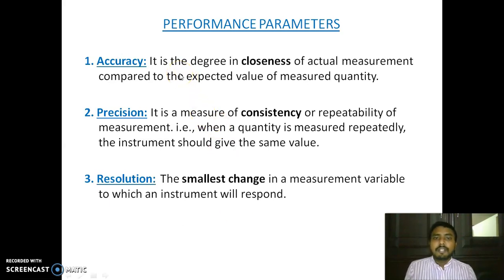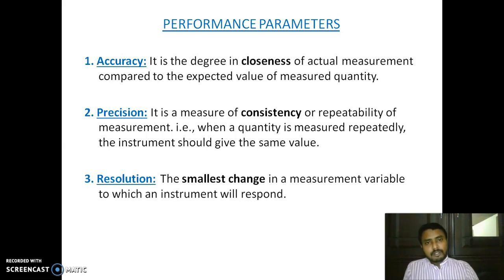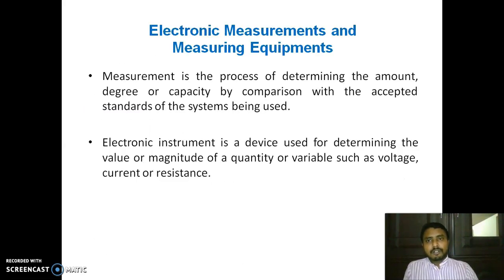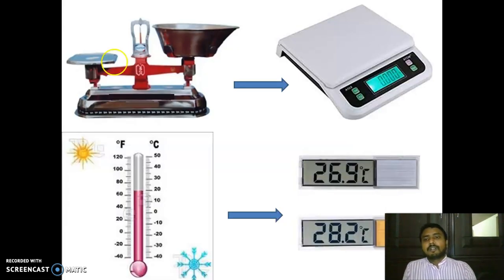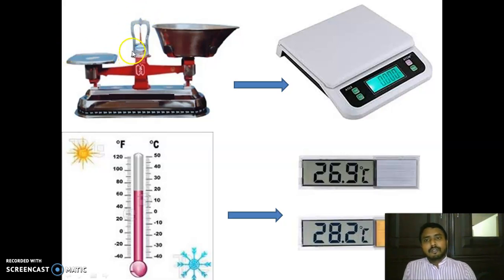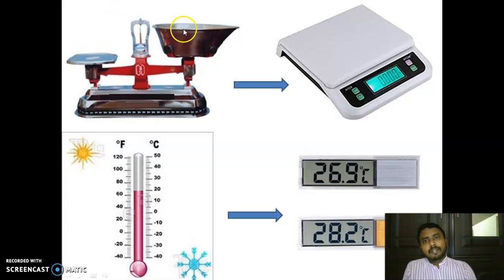The first parameter is accuracy. Accuracy is the degree of closeness of the actual measurement compared to the expected value of the measured quantity. To understand this, take the example of measuring one kilogram of sugar. We place a one-kilogram stone on one side and take one kilogram of sugar on the other plate. When the needle is exactly at the midpoint, we say it is one kilogram.